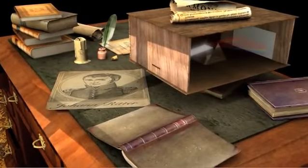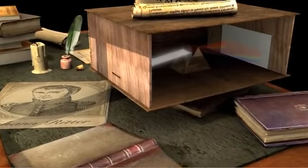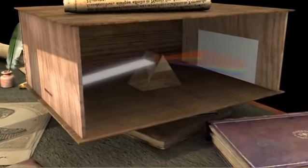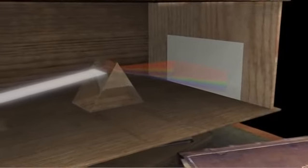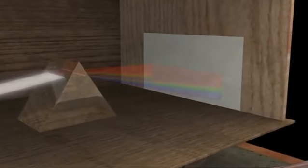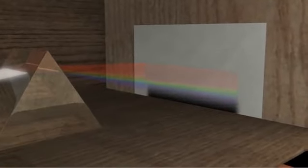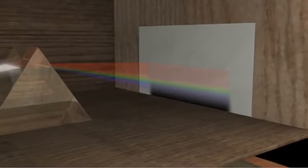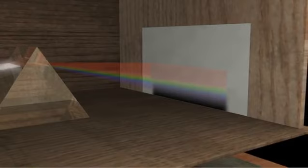Ritter knew that photographic paper would turn black more rapidly in blue light than in red light. So he tried exposing the paper beyond the violet end of the visible spectrum. Sure enough, the paper turned black, proving the existence of light beyond violet, ultraviolet rays.